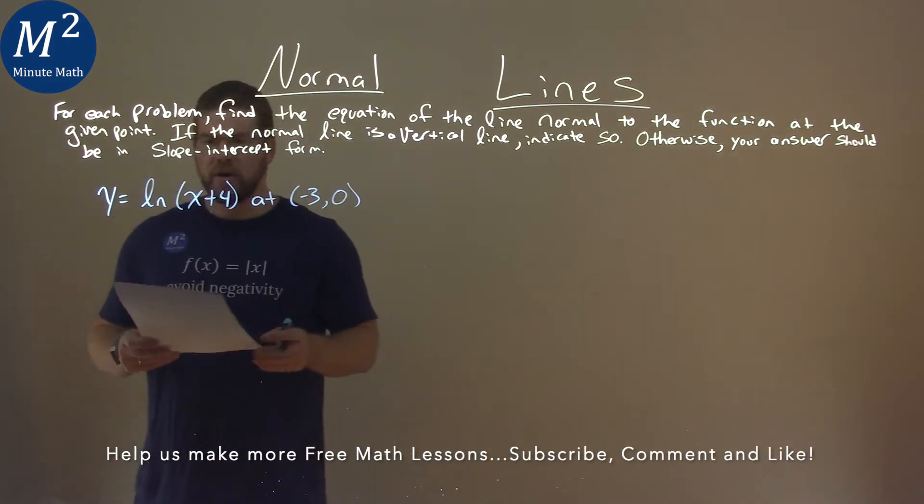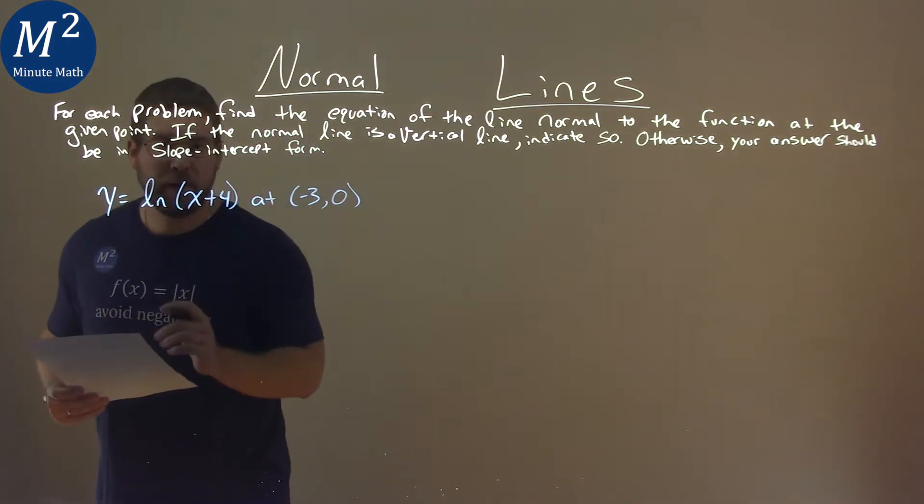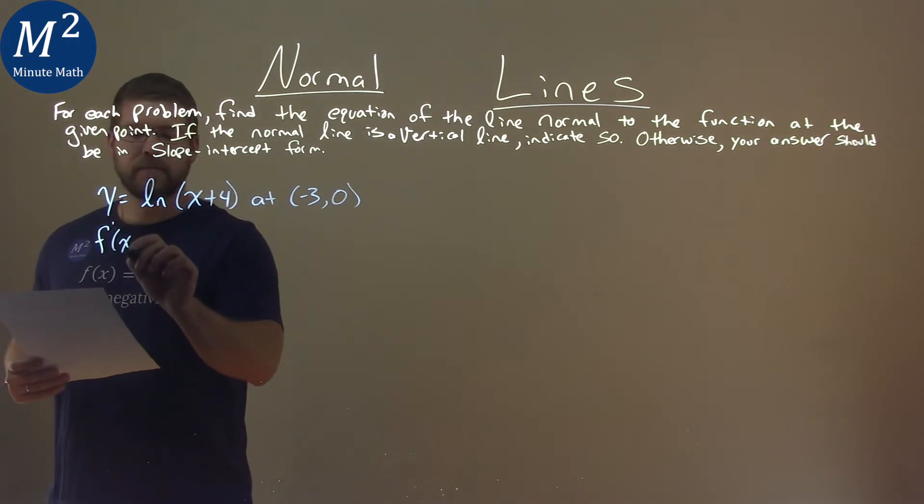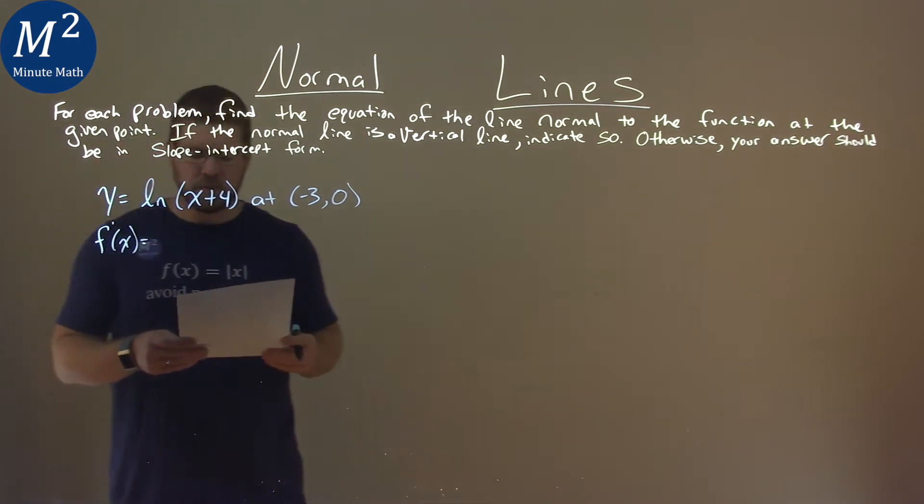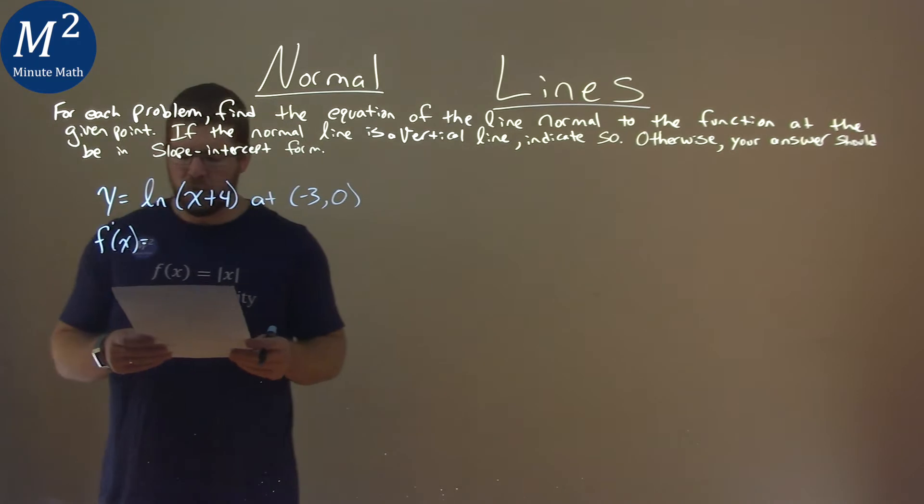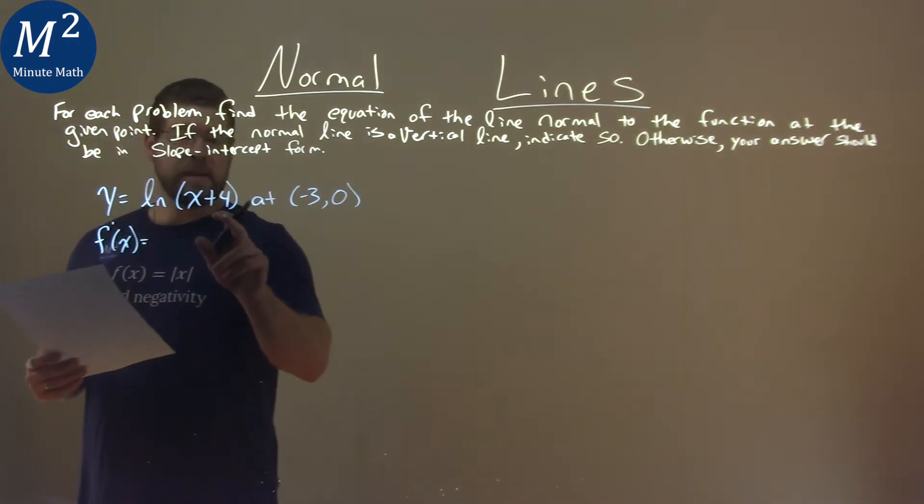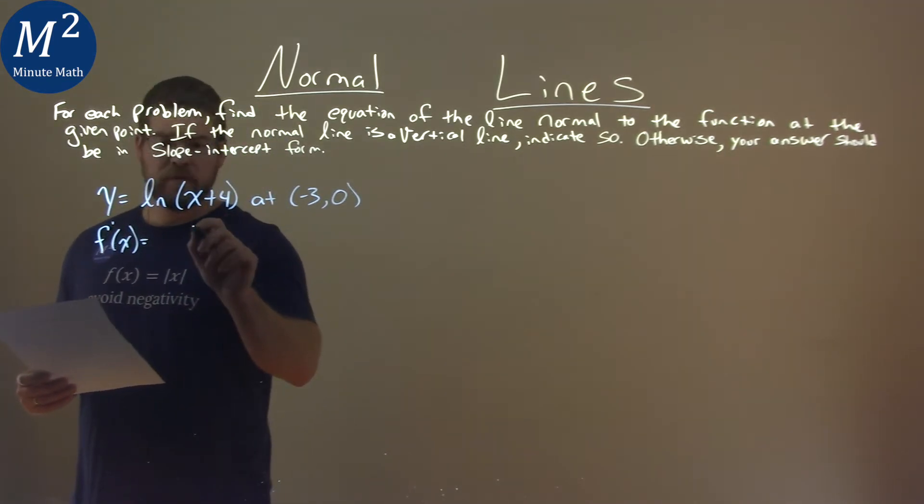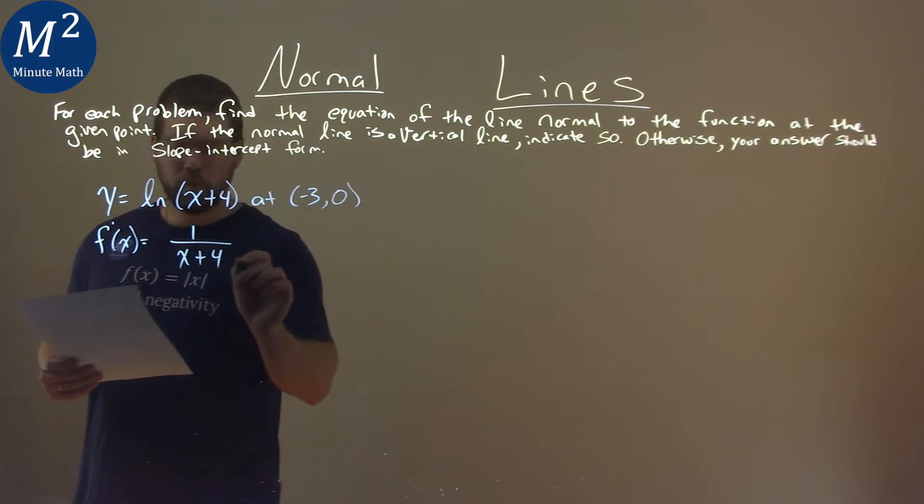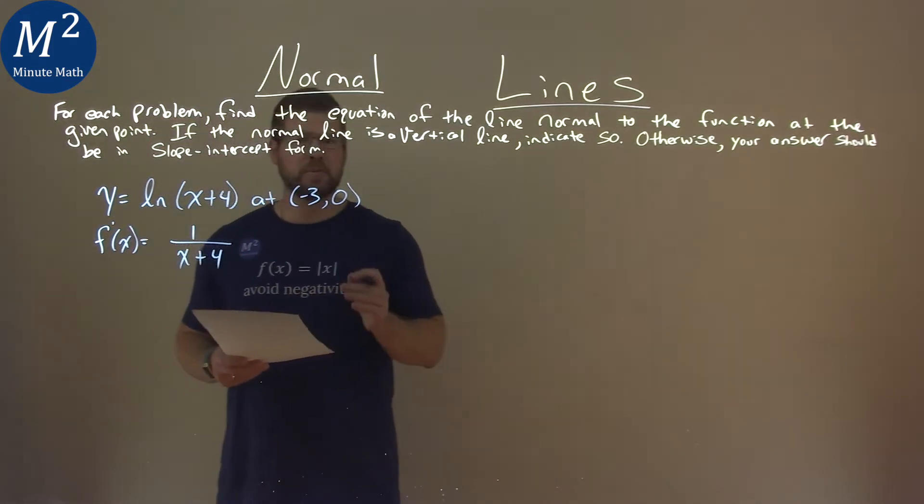First thing is I want to go find the derivative of my function. Let's call it f prime of x. The derivative of natural log of u is u prime over u. Well, derivative of the inside of x plus 4 is just a 1, and we put it over x plus 4 here. Pretty easy derivative.